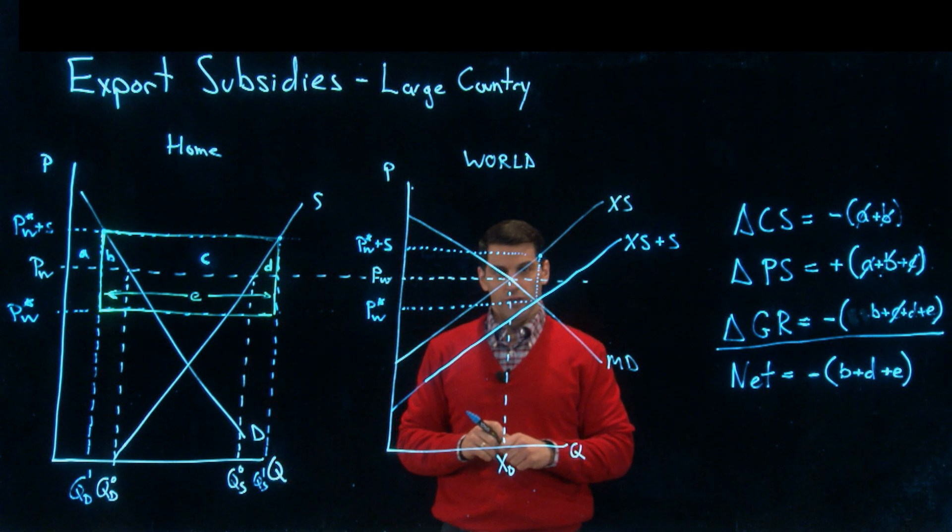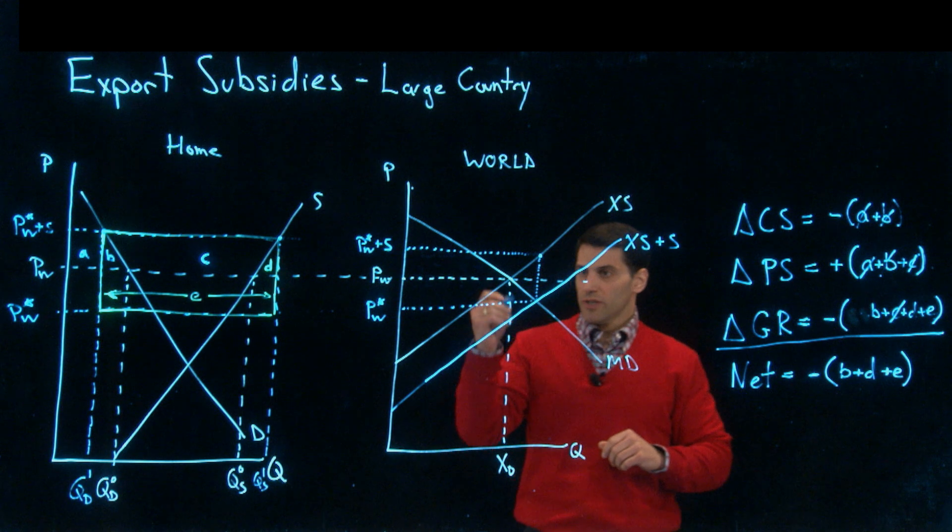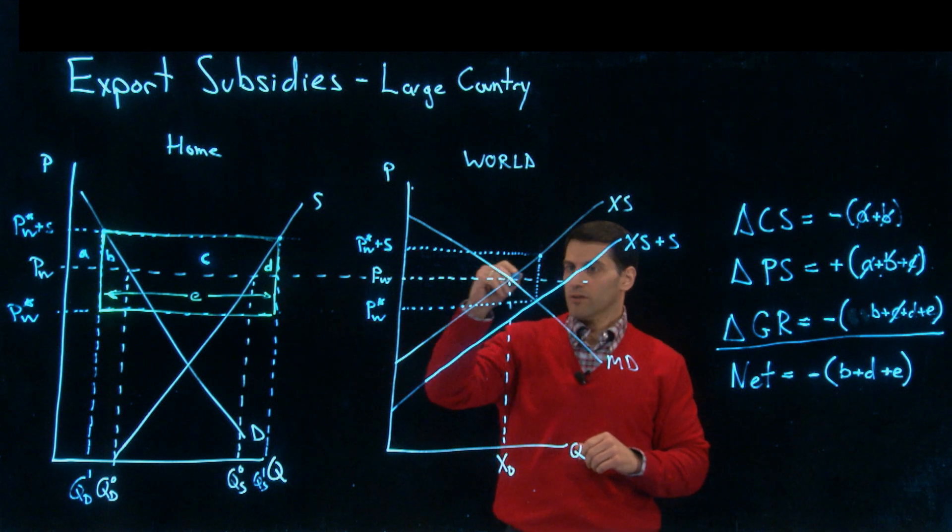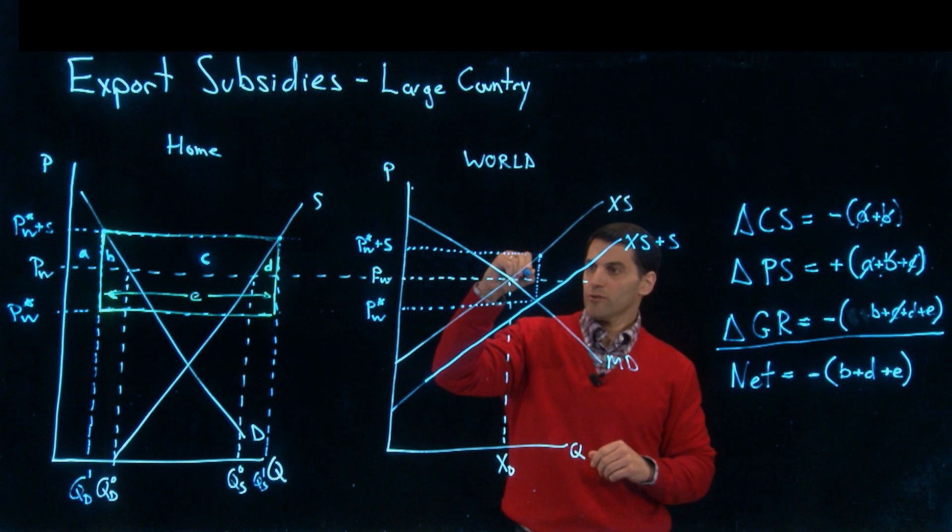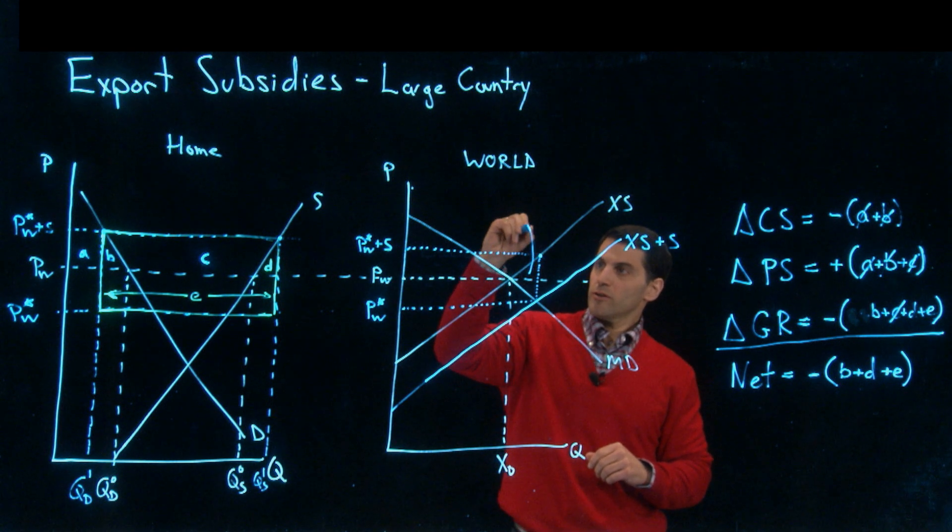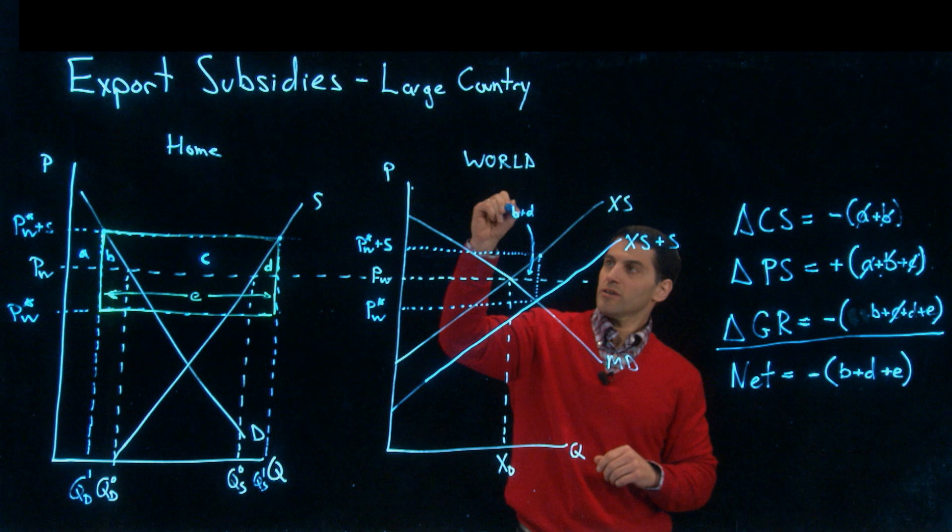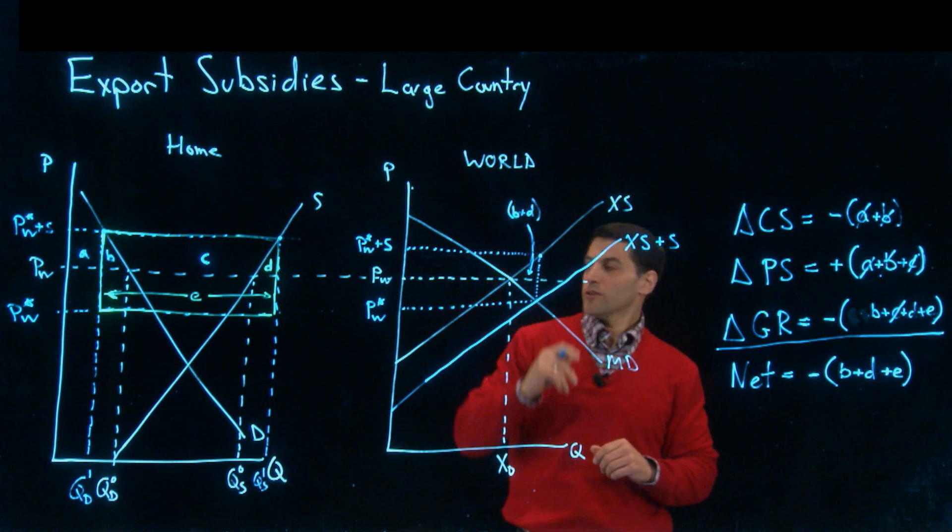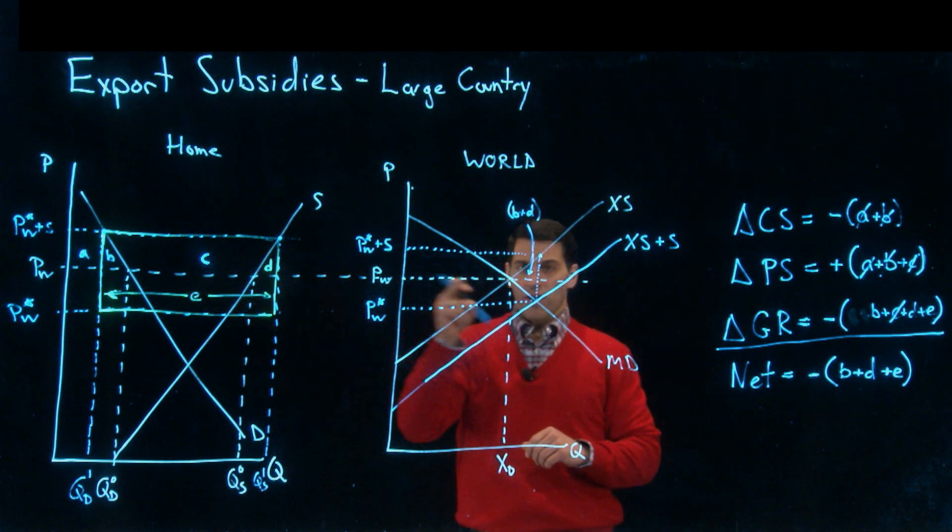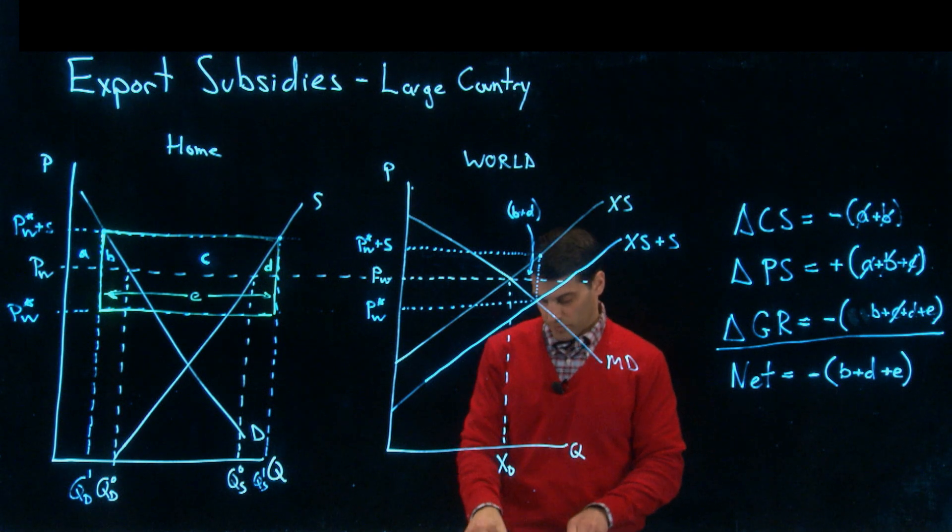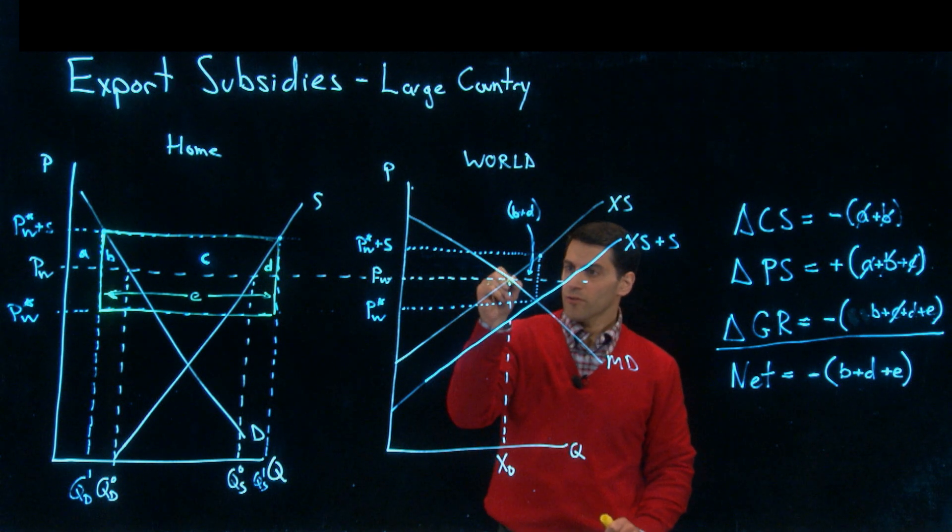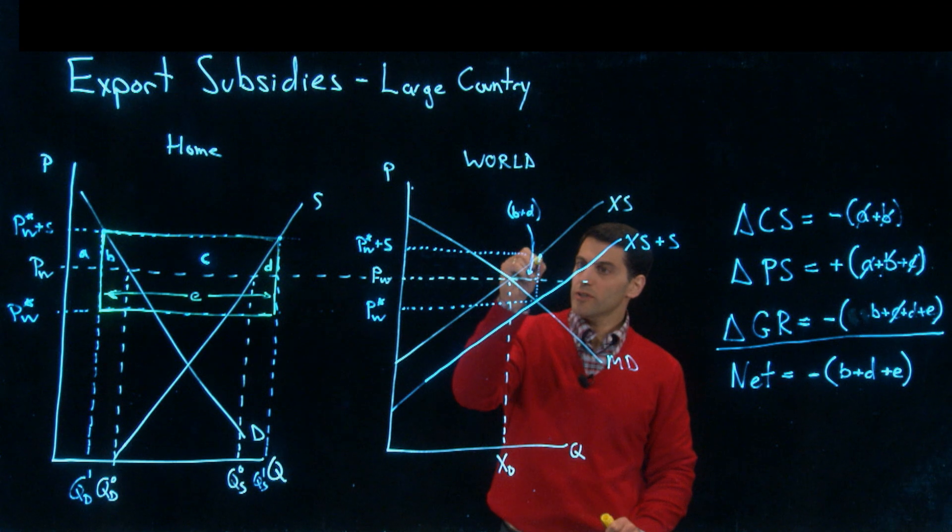As we can see, we've got our losses of B and D, which are also reflected in here. There's our deadweight loss, our B and D, that's in our home country graph is this triangle in here. There's our B and D.